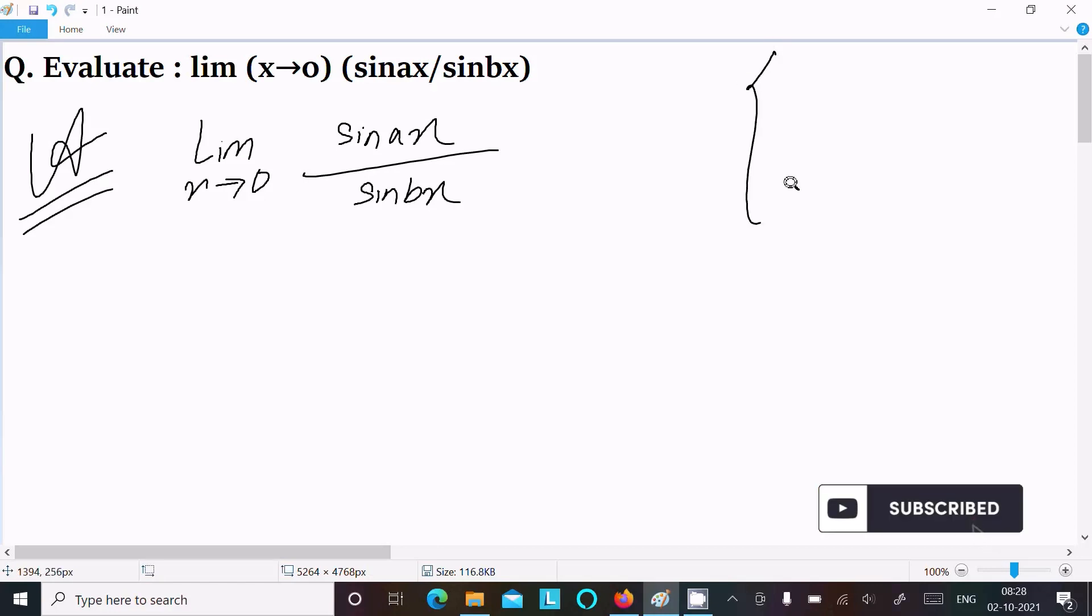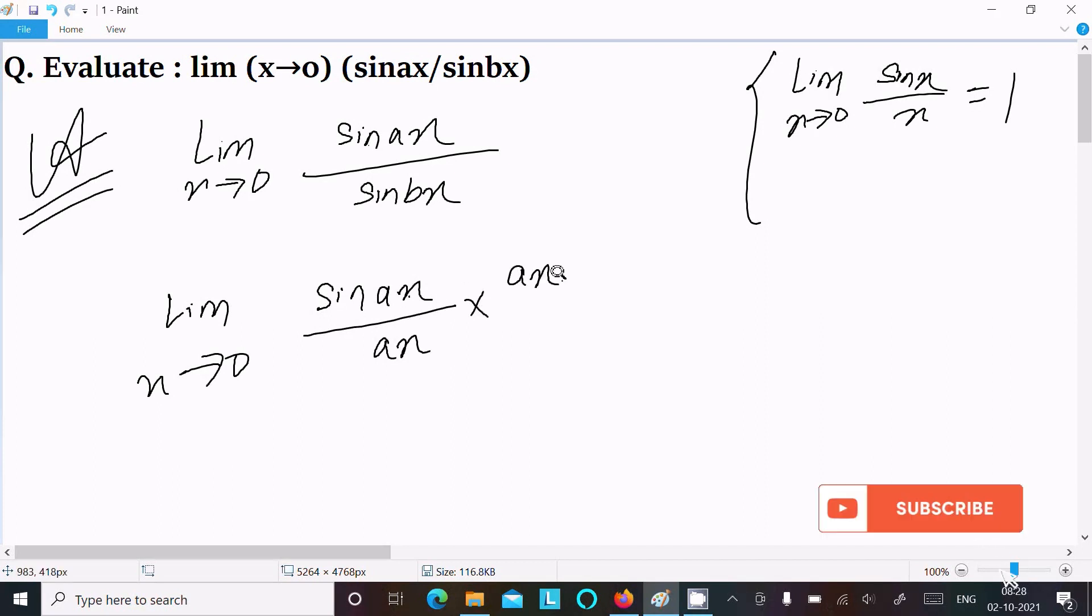So we know the formula - first here we need to write limit x tends to 0 sin(x) divided by x, that is equal to 1. So here writing limit x tends to 0, this sin(ax) we need in denominator ax, so we need to multiply here ax. This cancels, there is no any effect.